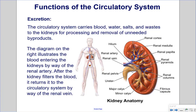Excretion: The circulatory system carries blood, water, salts, and waste to the kidneys for processing and removal of unneeded byproducts. The diagram illustrates blood entering the kidneys by way of the renal artery. After the kidney filters the blood, it returns it to the circulatory system by way of the renal vein — blood comes in through the renal artery, the kidney filters it, and clean blood returns via the renal vein.